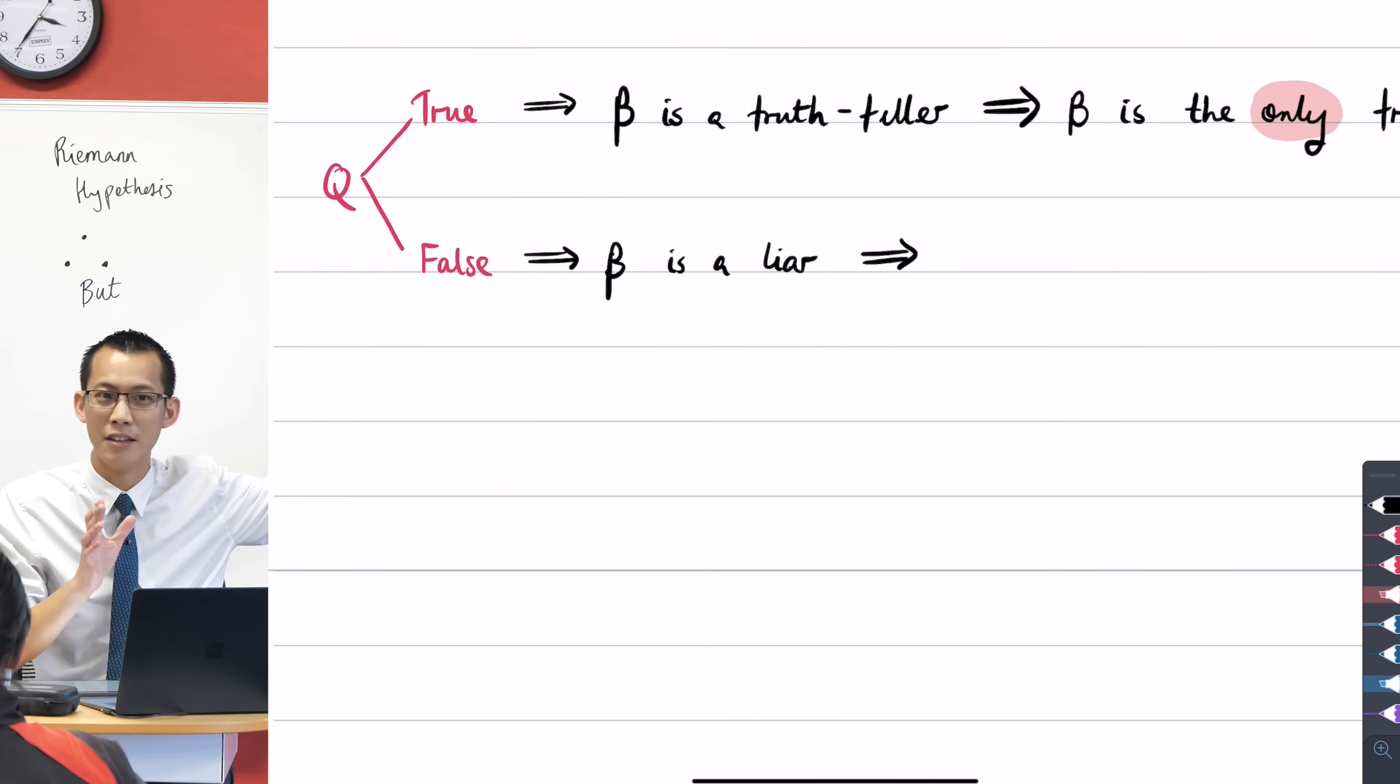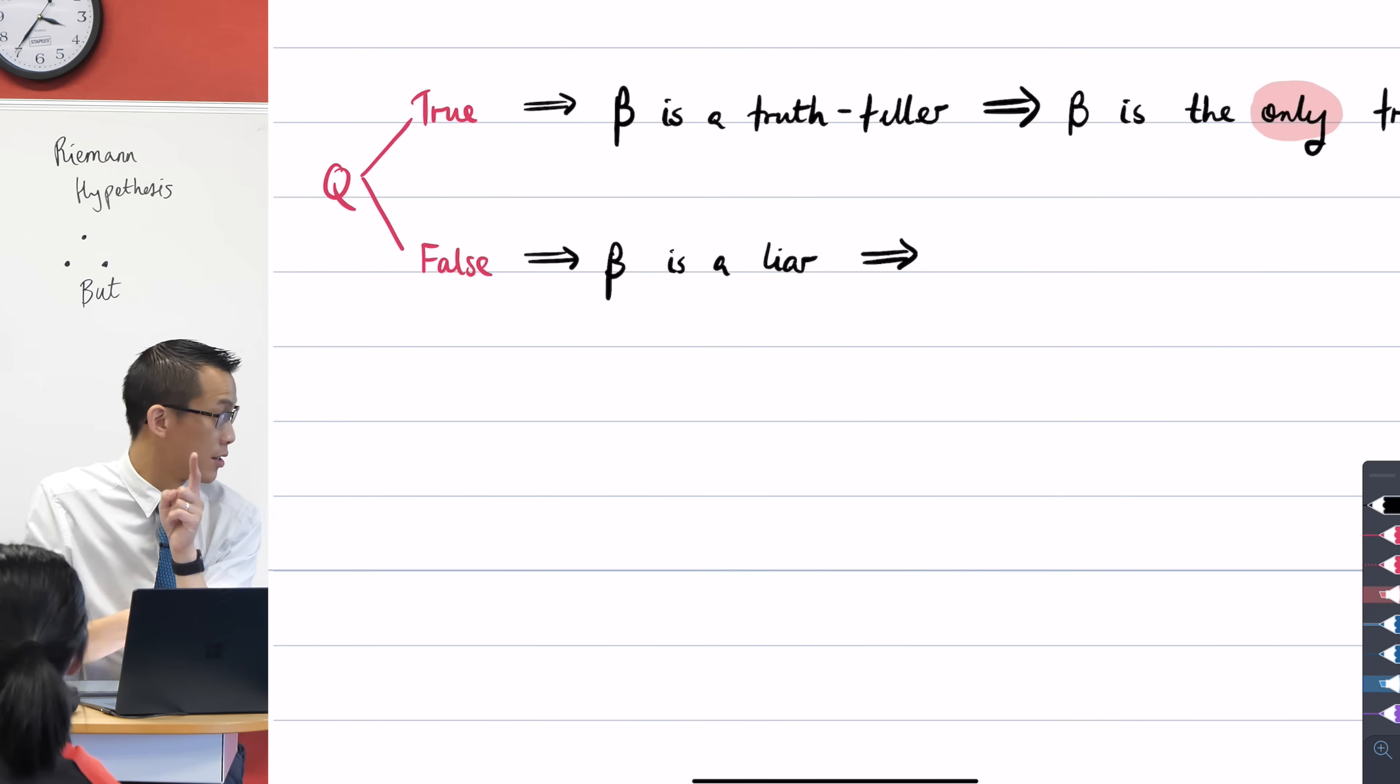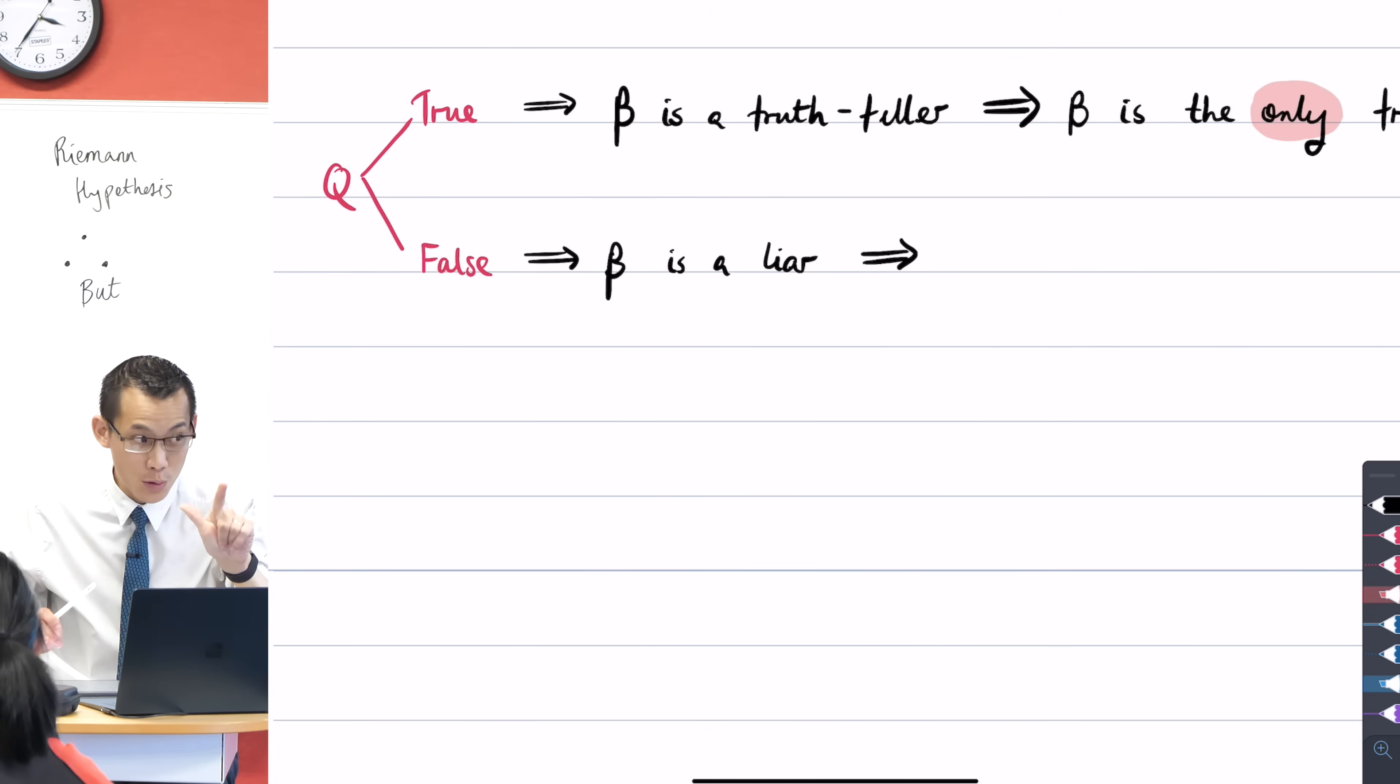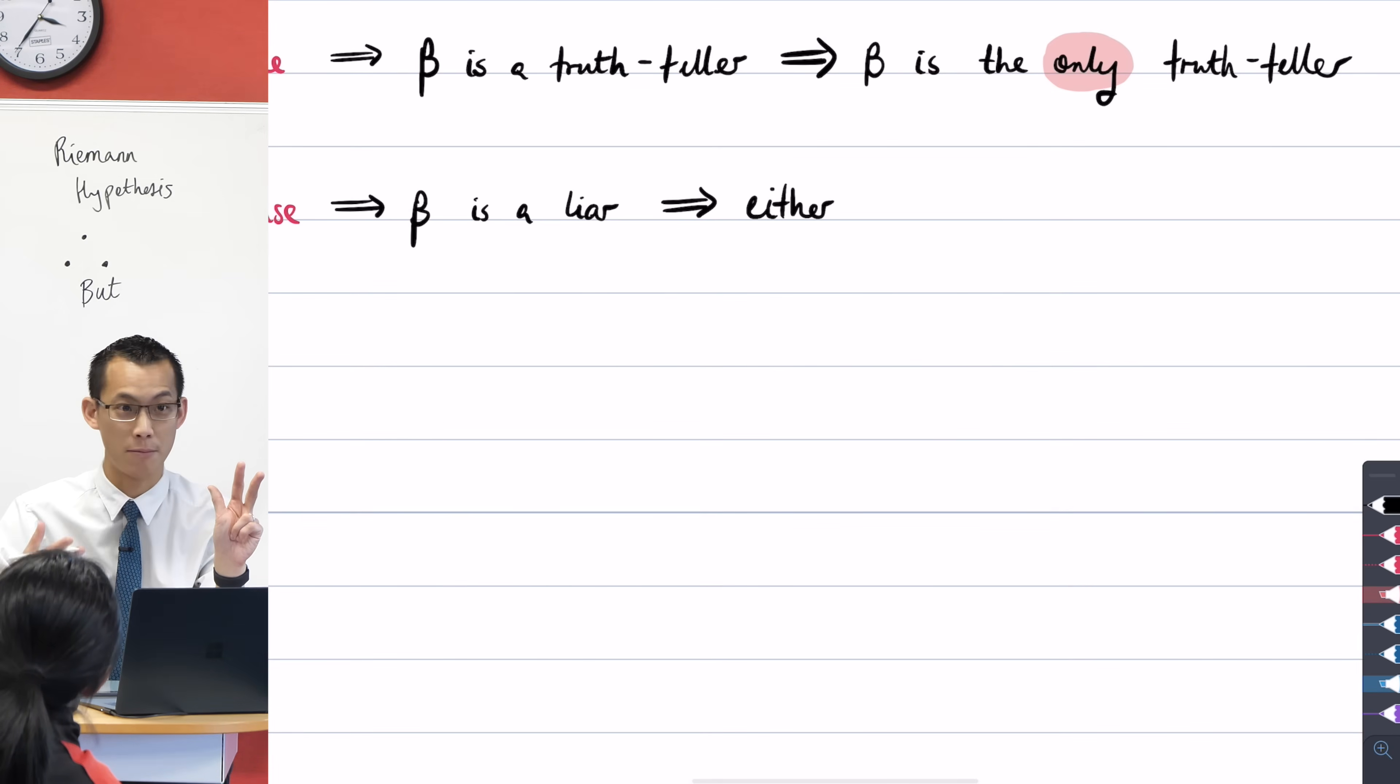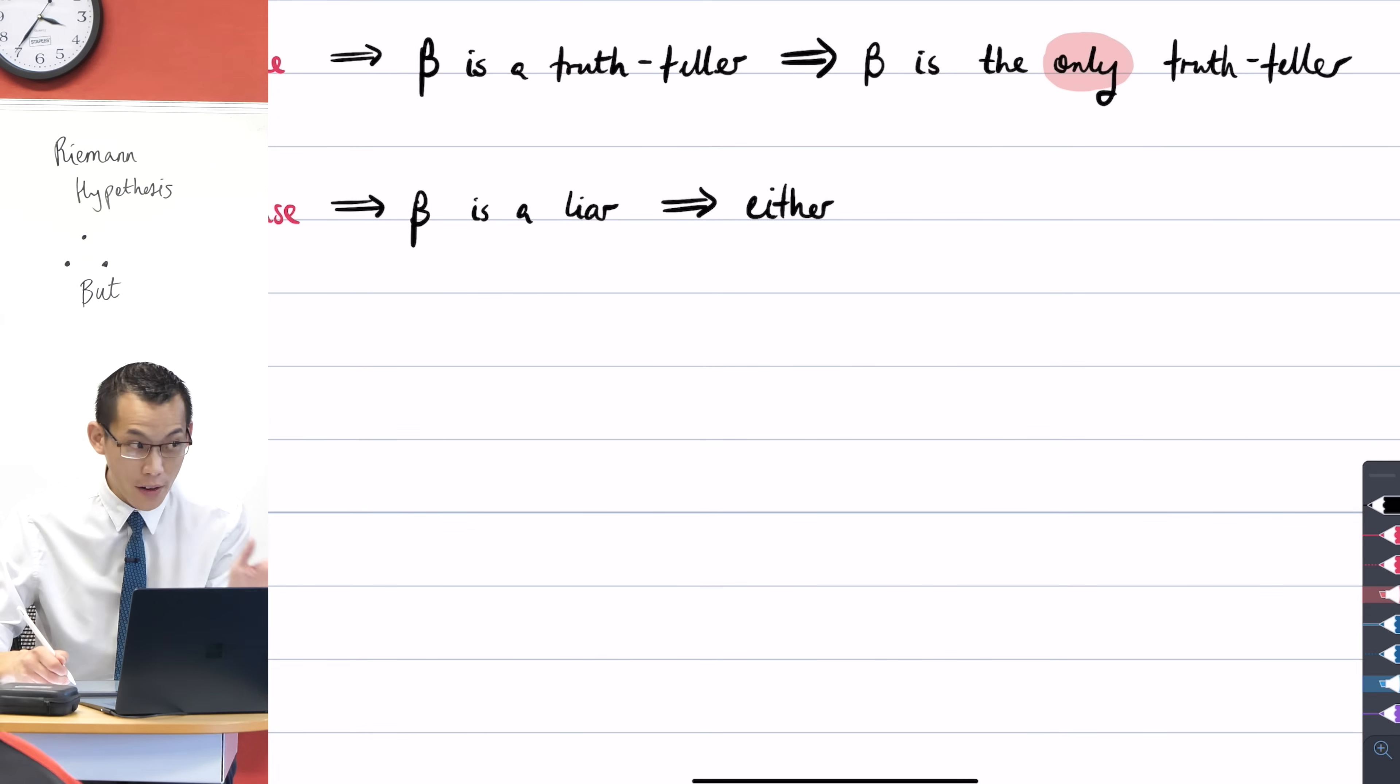If they're a liar, now have a look at the content of their statement. The content was that there's only one truth-teller. But we're now supposing that that's not true. So how many truth-tellers could there be? We know there can't be one because we've just assumed it's false. So what are the other options? There's only three. Zero or two or three. Now I'm going to write all of those cases because each one has an implication.